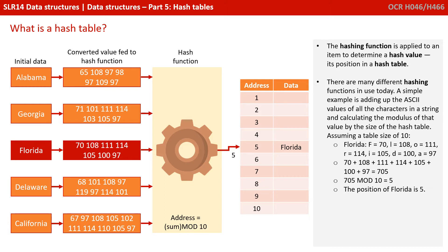Assuming a table size of 10, with 'Florida': F's decimal ASCII value of 70, followed by 108, 111, 114, 105, 97. When we add all those together, we get 705. Performing modulus 10 gives us 5. So this hashing function would give us a hash value, or a position in the hash table, of 5. And that's where we store Florida.